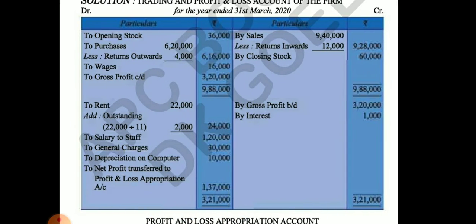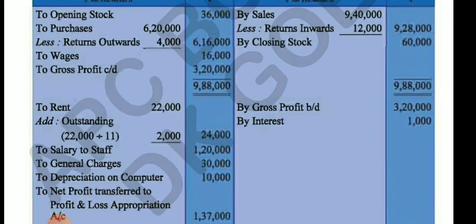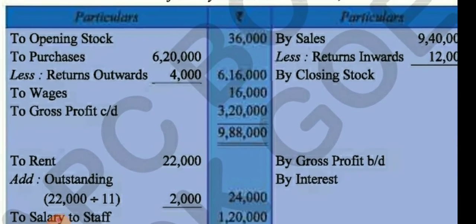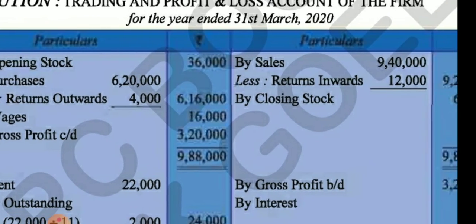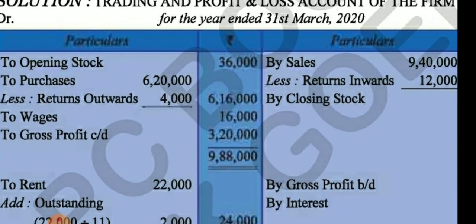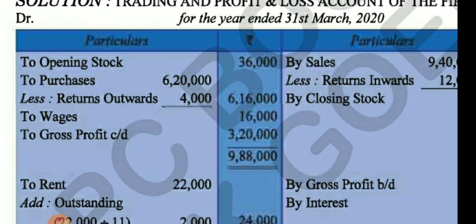Now we are going to make the Trading and P&L account. The Trading account has two sides — debit and credit — with a particulars column and amount column on both sides. Start with opening stock: ₹36,000. Then purchases: ₹6,20,000. Return outward is given, so we enter return outward: ₹4,000.